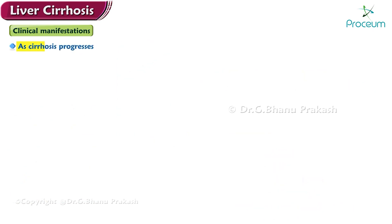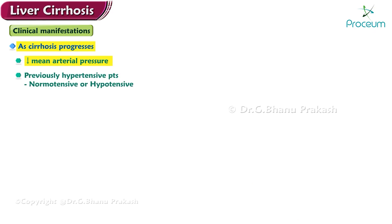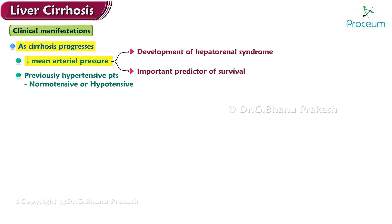As cirrhosis progresses, patients often have a decrease in mean arterial pressure. Patients who were previously hypertensive may become normotensive or hypotensive. The decrease in mean arterial pressure contributes to the development of hepatorenal syndrome and is an important predictor of survival.